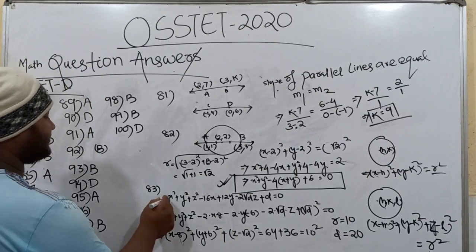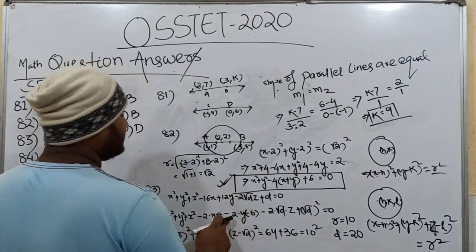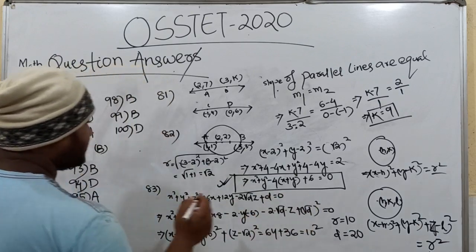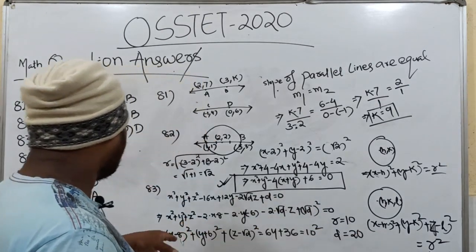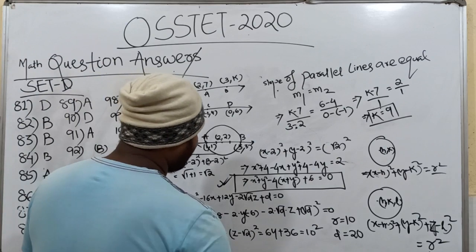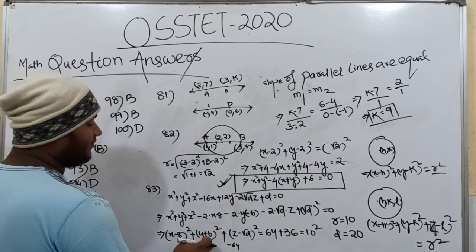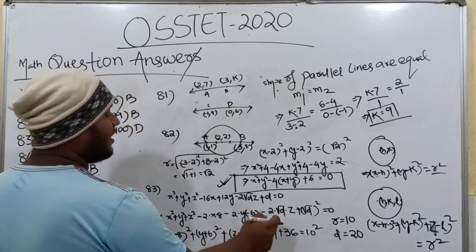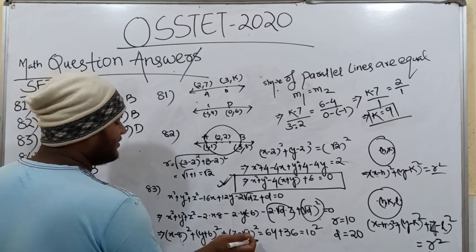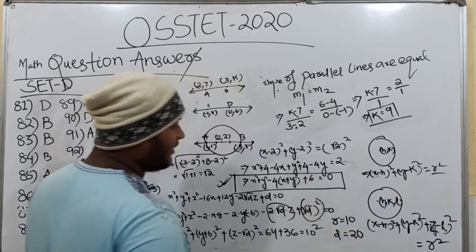In this case, completing the square: 16x, 2 into x into 8, 12 by 2, minus 2 into y into minus 6. X minus 8 all square in the first part, minus 64, minus 64, minus 36, equals 100. So radius equals 10 and diameter equals 20.